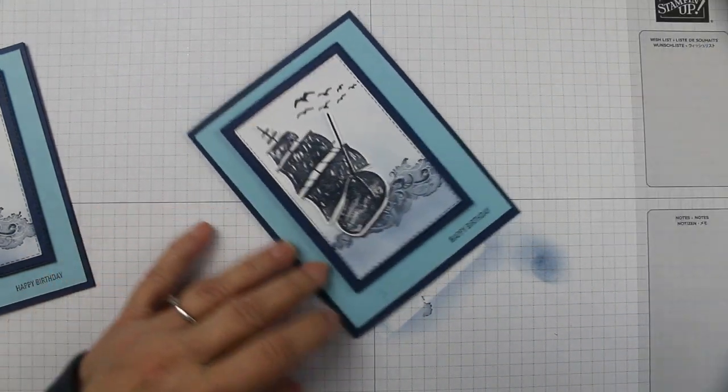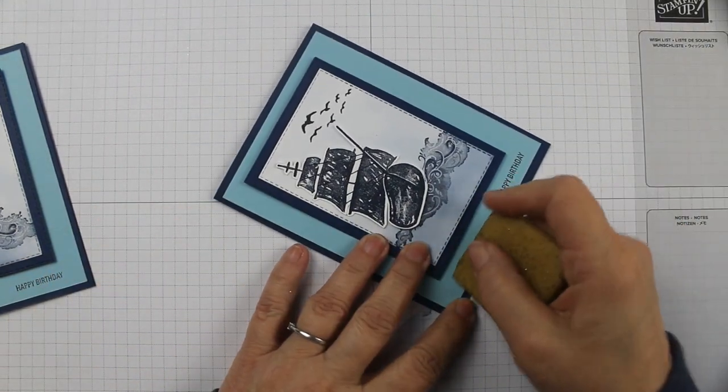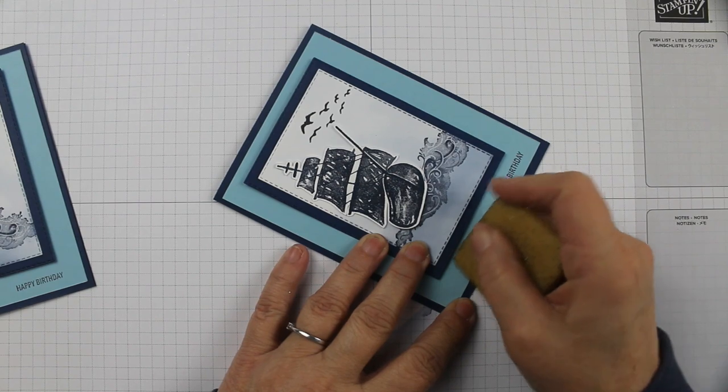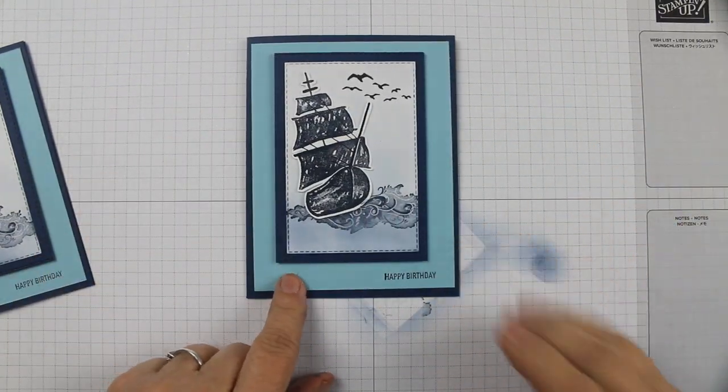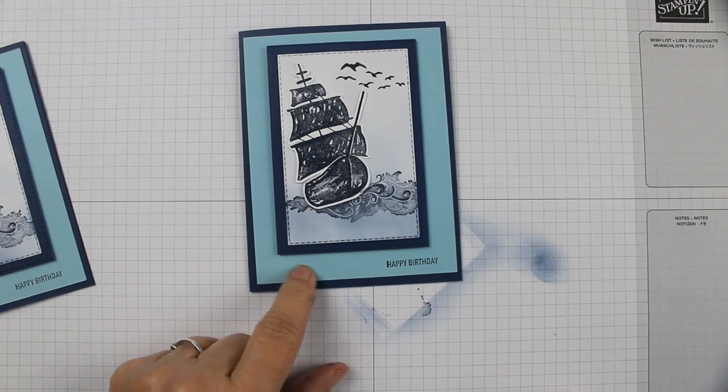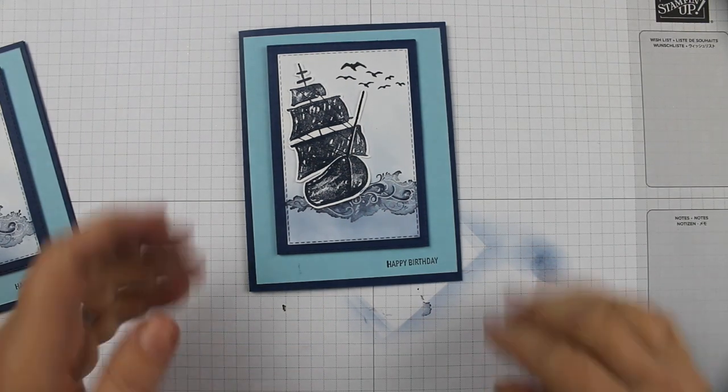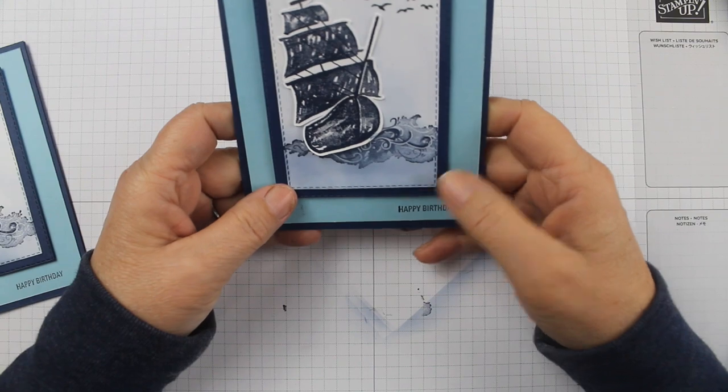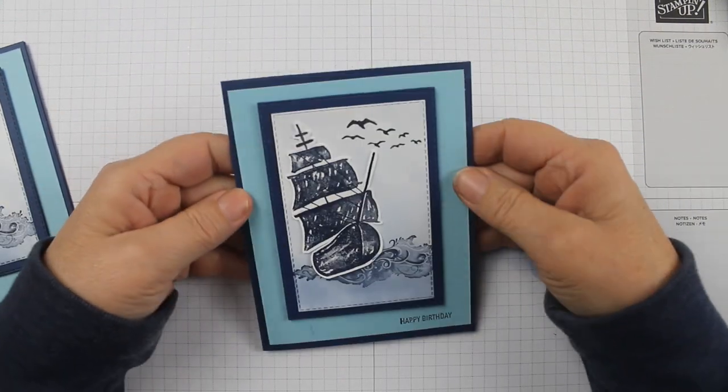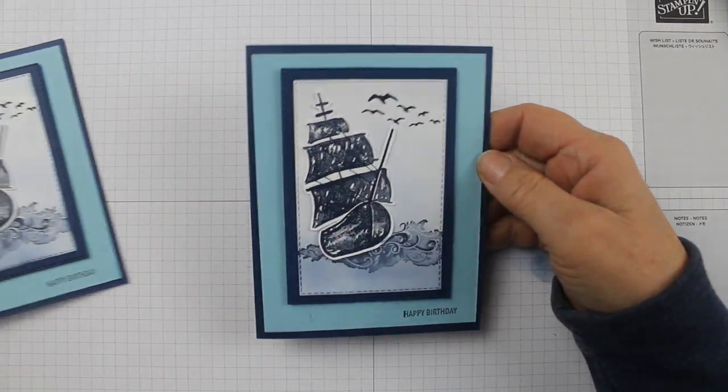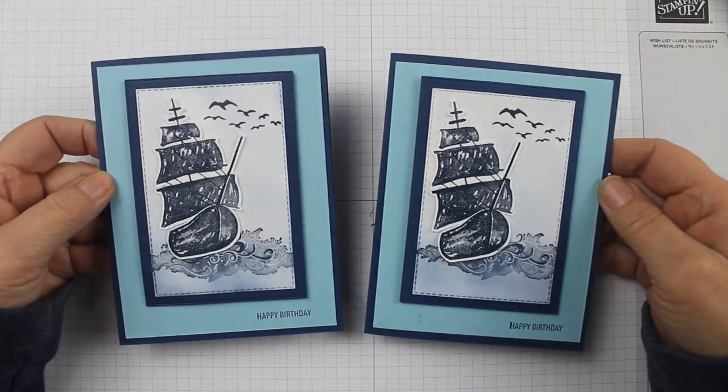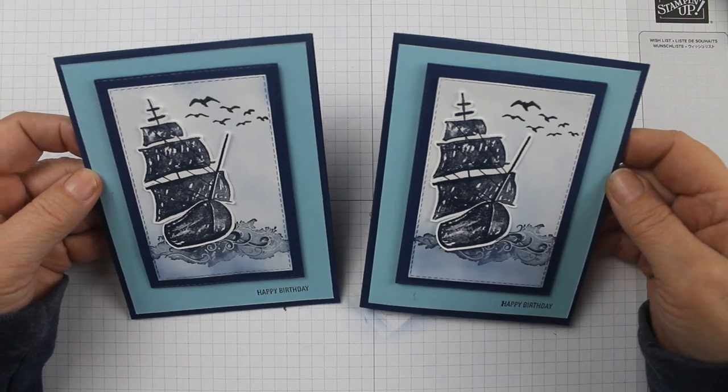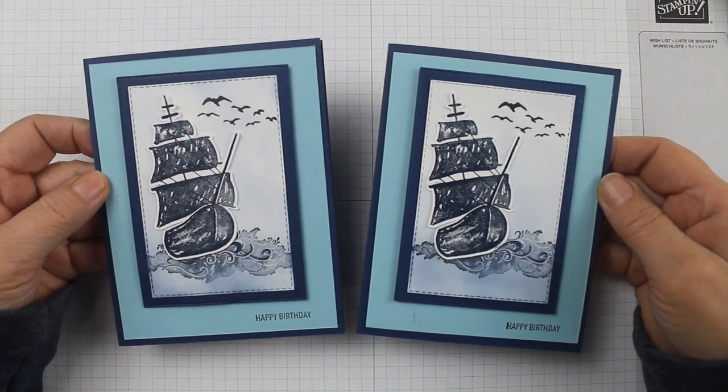I got a little bit of ink right there, so you're just going to place this down on your card. Let's see if I can maybe erase this off of here. Nope. So if you get ink on your card like that, you can always put some rhinestones or something like that to cover that. So I may go back and do that afterwards, but there you have it. That's it - easy and simple and just super classic looking, a great masculine birthday card.